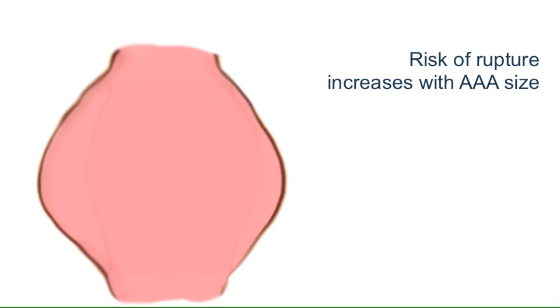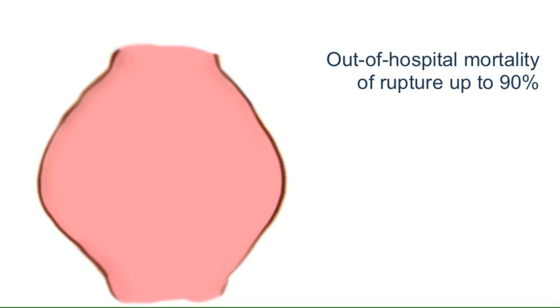This weakens the aorta leading to progressive ballooning. The larger the AAA becomes the more likely it is to rupture. Ruptured AAA has an overall mortality rate approaching 90%. It is therefore an important condition to understand in terms of elective and emergency treatments.